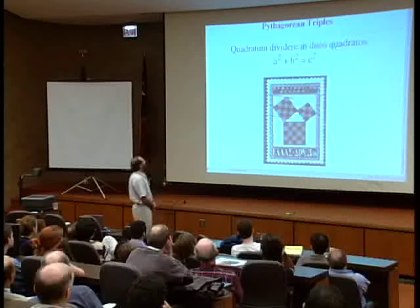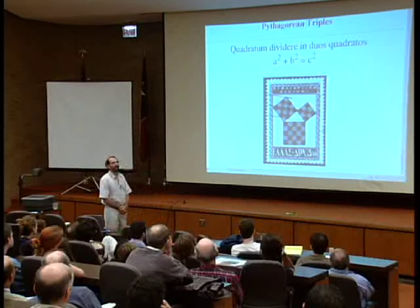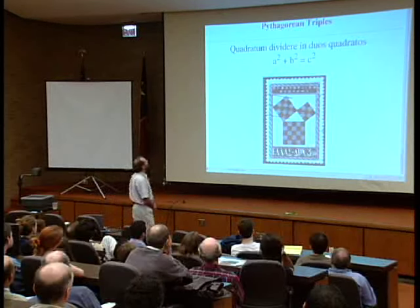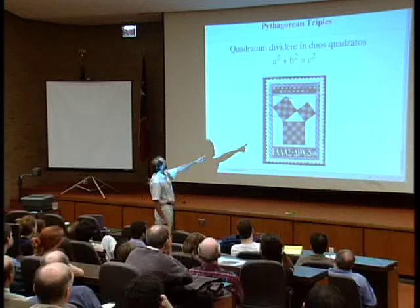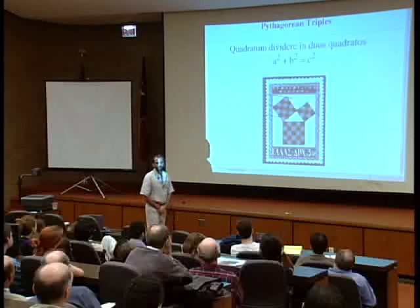Here on this stamp from Greece, you can see a solution which you probably know already — that is, 3 squared plus 4 squared is equal to 5 squared.